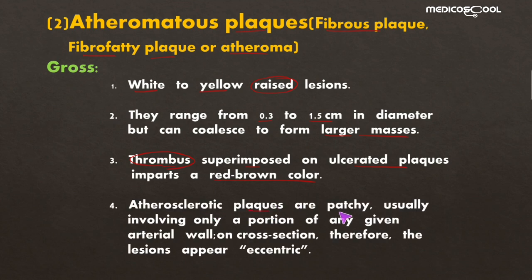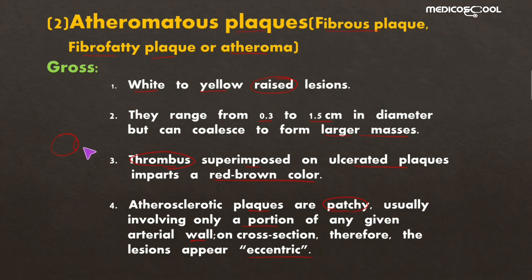Atherosclerotic plaques are patchy and are mainly present on a portion of a given arterial wall. On cross-section, the lesion appears eccentric — meaning the plaque occupies only a portion of the arterial wall rather than the full circumference, giving it an eccentric appearance.